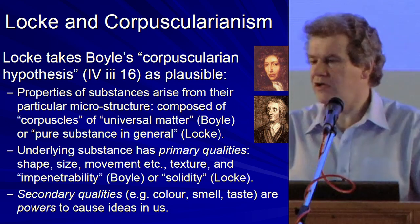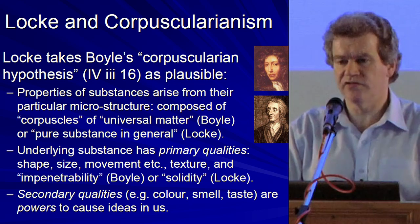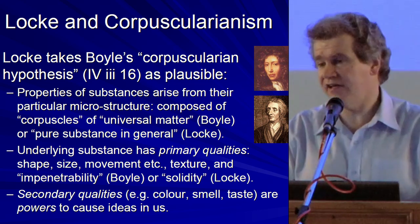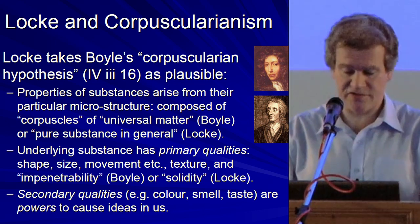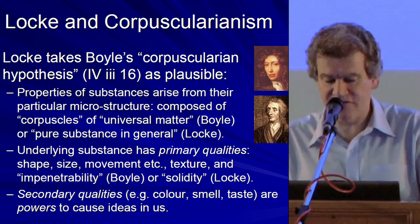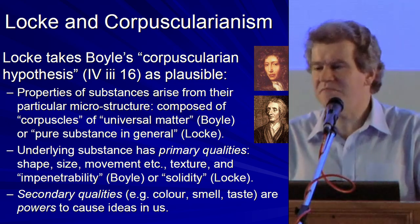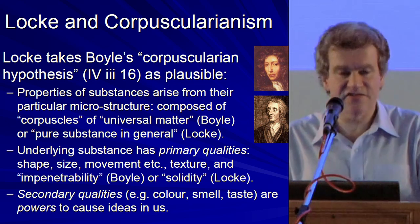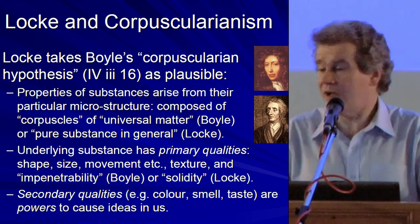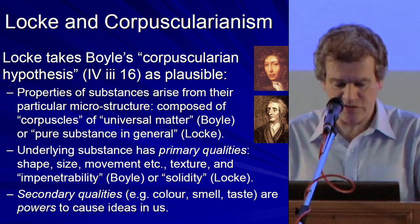John Locke took over Boyle's corpuscularian hypothesis. He mentions it explicitly in the Essay, only once — Book 4, Part 3, Section 16. He doesn't commit himself to it definitively, but says it seems to come closest to an intelligible explanation of how things work.